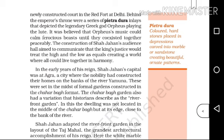It was believed that music could make ferocious beasts coexist together peaceably. The construction of Shah Jahan's audience hall aimed to communicate that the king's justice would treat the high and low as equals, creating a world where all could live together in harmony.